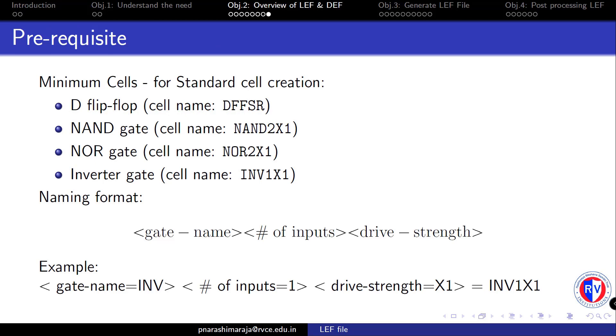So before we generate the LEF file, we first look into the prerequisites that are needed to successfully generate the LEF file. The very first prerequisite is the minimum number of cell requirement for the standard cell creation. Those are the D flip-flop (cell name DFFSR), NAND gate (cell name NAND2X1), NOR gate (cell name NOR2X1), and inverter gate (cell name INV1X1).